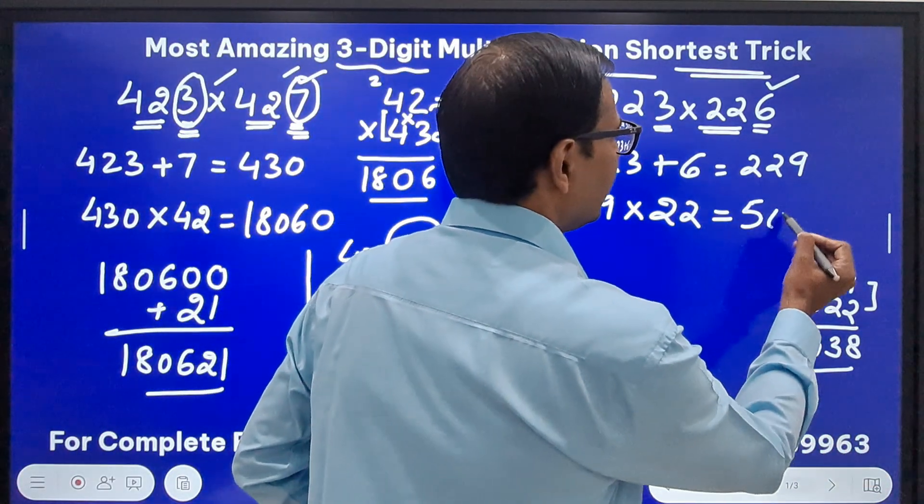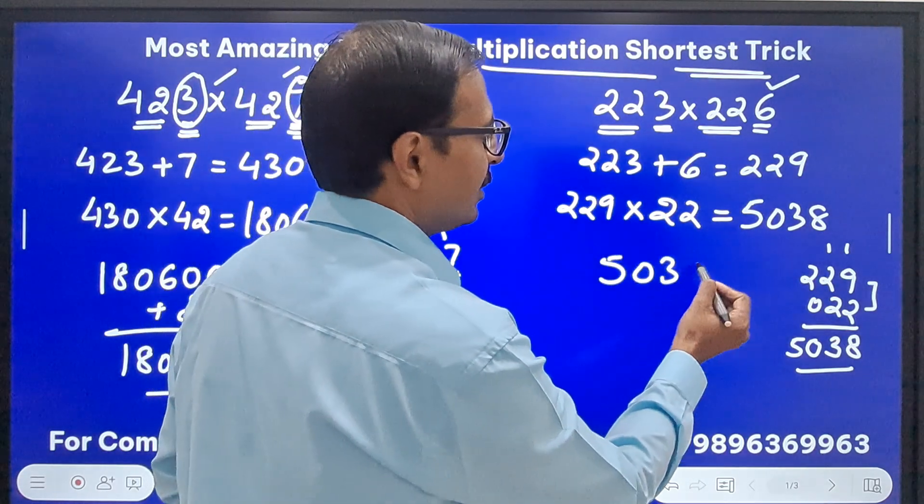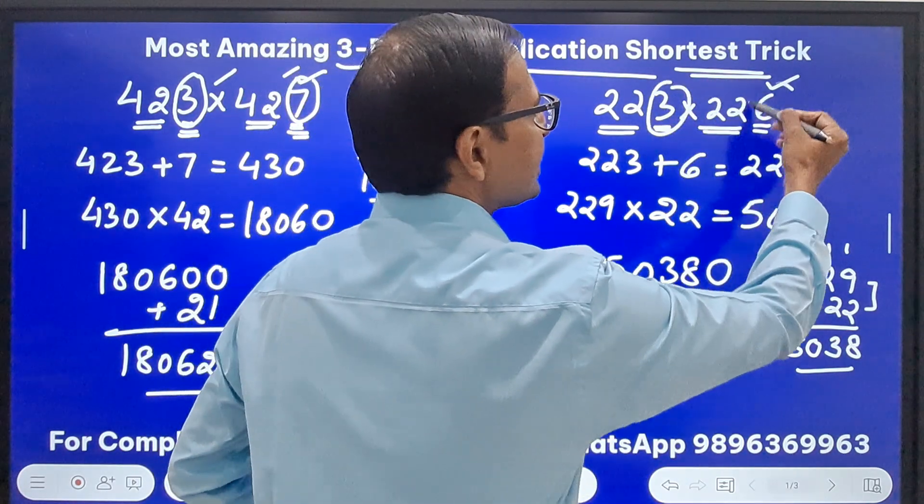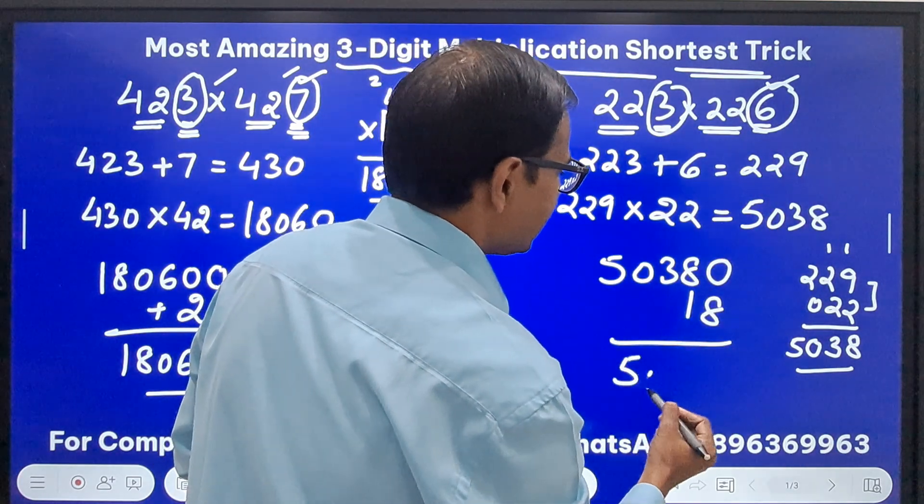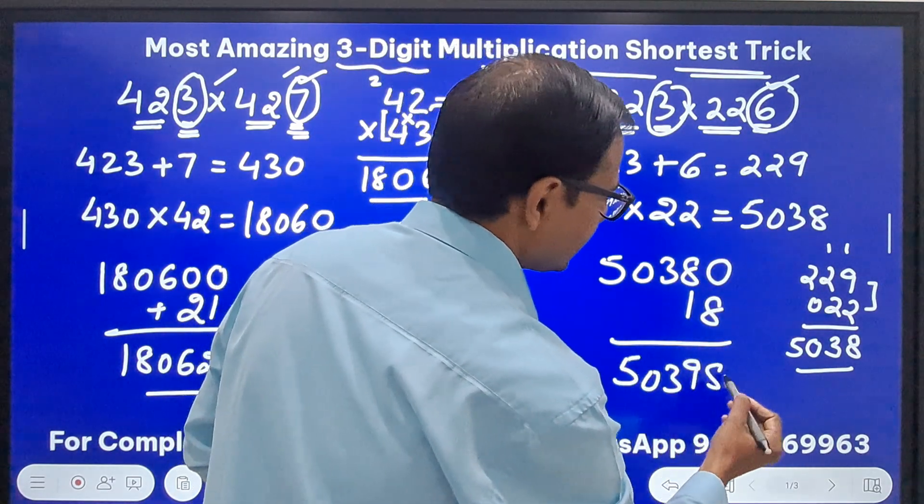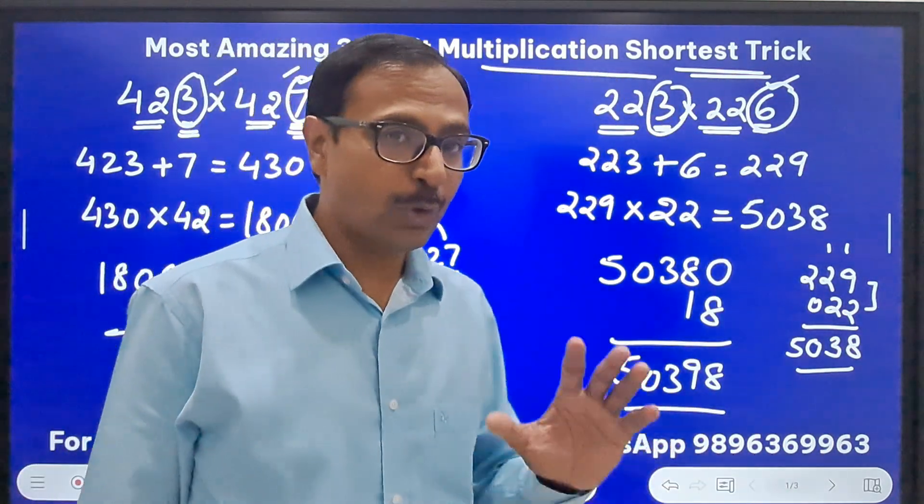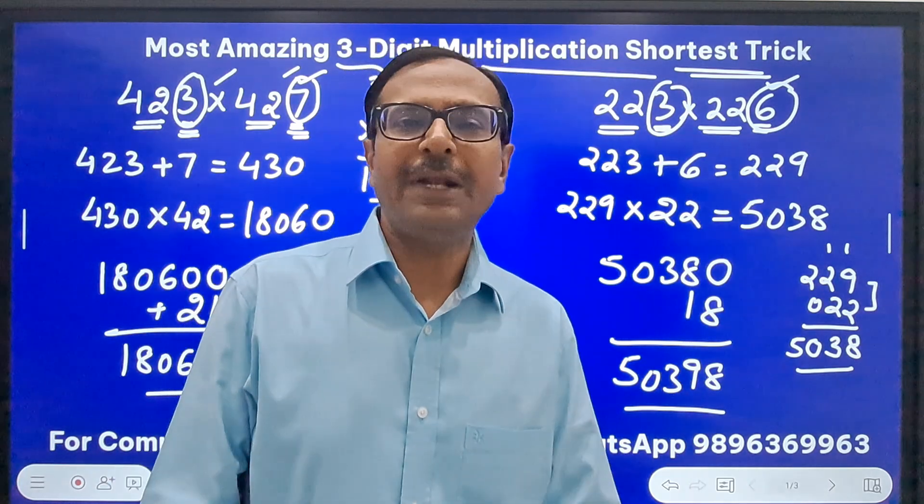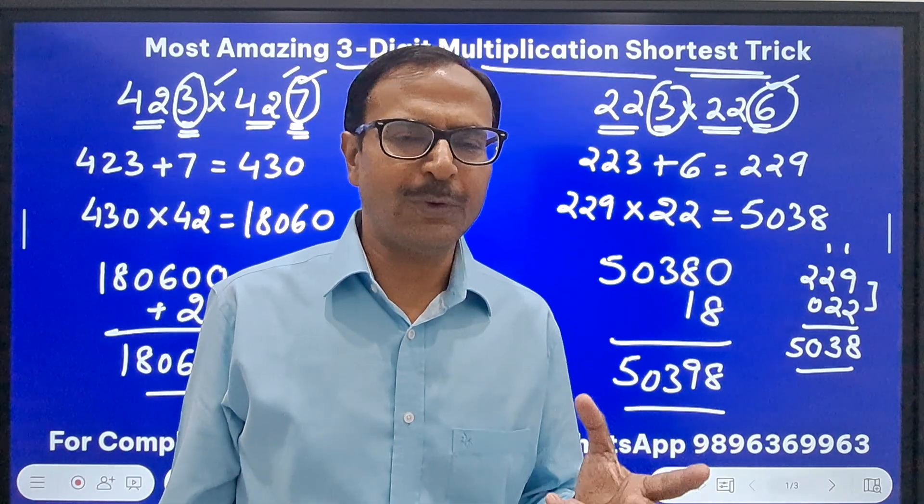So this gives me 5038. What do I do with this? 5038, suffix a 0. And then unit digits 3 and 6, the product is 18. Just add 18 to the result. 50398 is the product of these two numbers. Yeah, I can do it more quickly you know, I am just wanting to demonstrate properly so that you can understand the logic first and then try to develop speed.